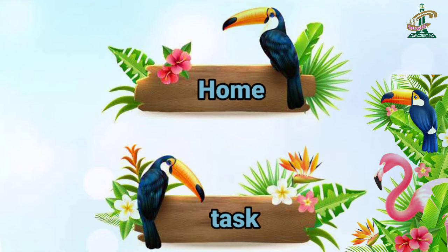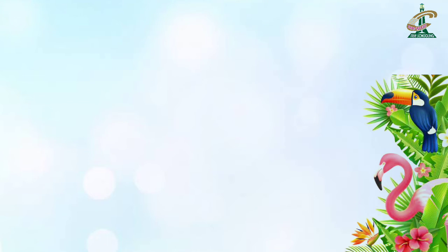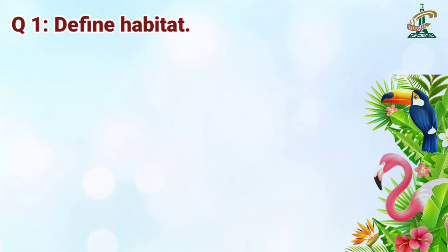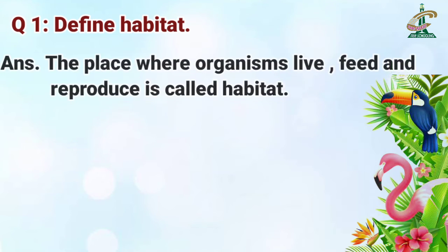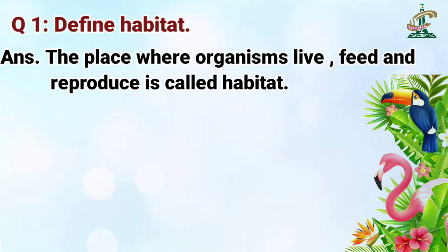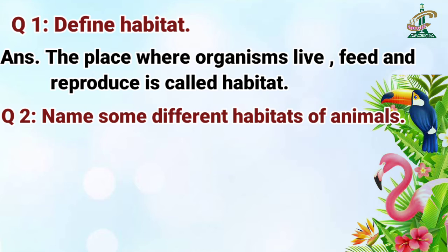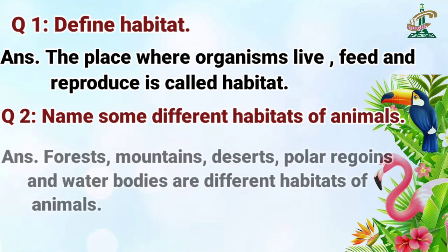Now students, it's time for your home task. I'm assigning you two questions to memorize. Question number one: define habitat. Answer: the place where organisms live, feed, and reproduce is called habitat. Question number two: name some different habitats of animals. Answer: forests, mountains, deserts, polar regions, and water bodies are different habitats of animals. Memorize these two questions well at your home.